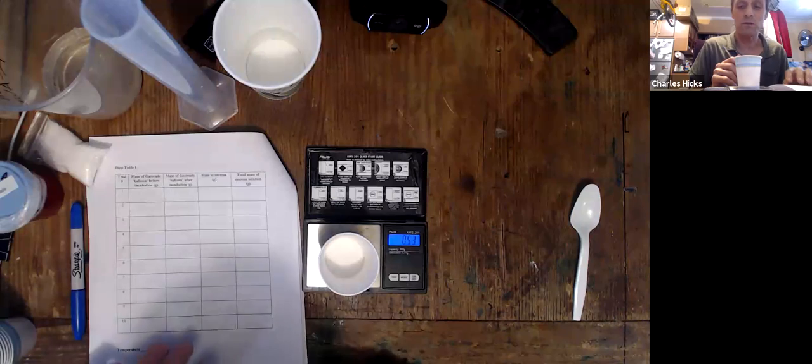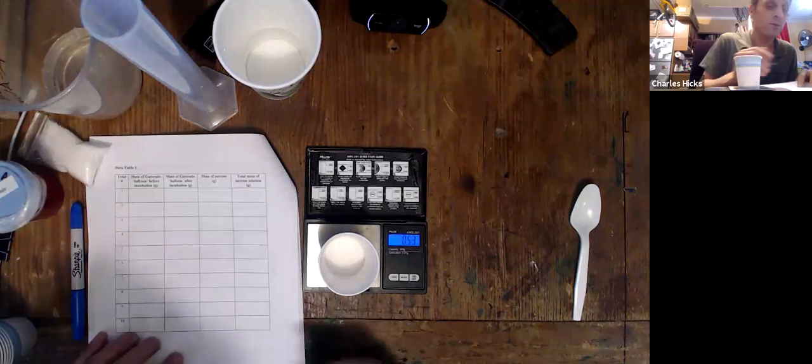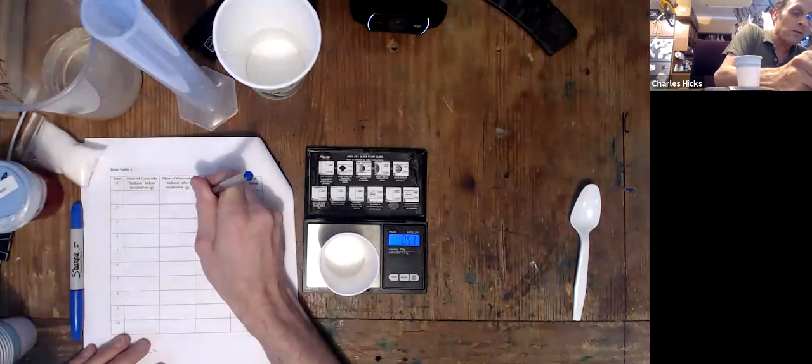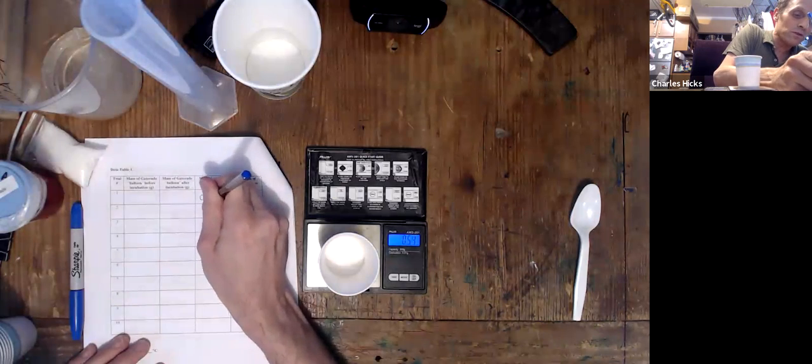So before I do anything else, I'll make sure I record that value. 0.53 now is what it reads, and that would be the mass of sucrose, and I'm doing trial one.